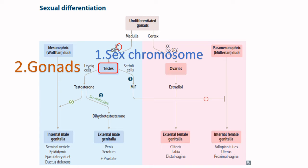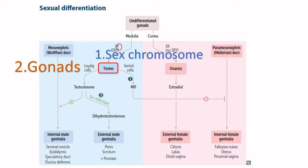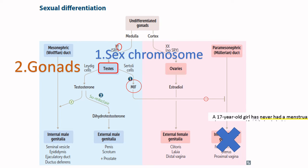That is why this patient refused pelvic or rectal examination — because they have undescended testes that can be palpated in the pelvis. Because they have testes, they must have Sertoli cells, which produce Müllerian inhibitory factor to block internal female genital development. So they do not have a uterus and they do not have fallopian tubes — which is why this patient presents with primary amenorrhea.